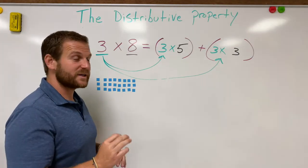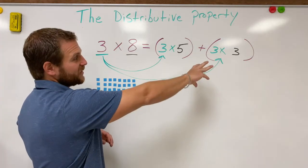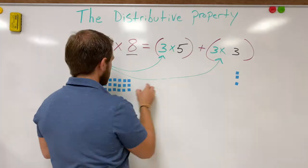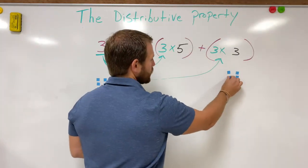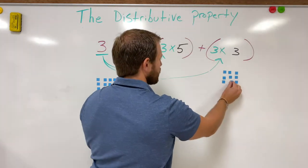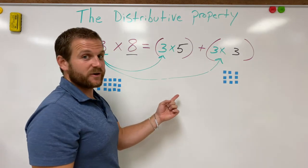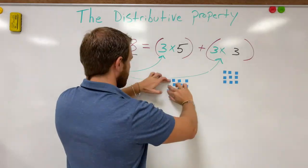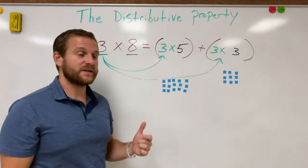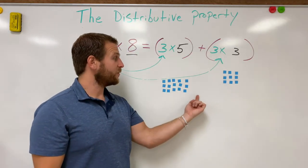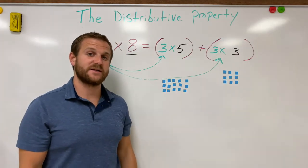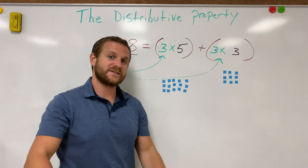One, two, three, 24. Perfect. So what I'm going to do is distribute these into two different arrays and keep my same total product. There's three rows of three over there. And now I have three times five of five left over. Three times five plus three times three is going to give me the same answer as three times eight, which is 24. That's the distributive property.